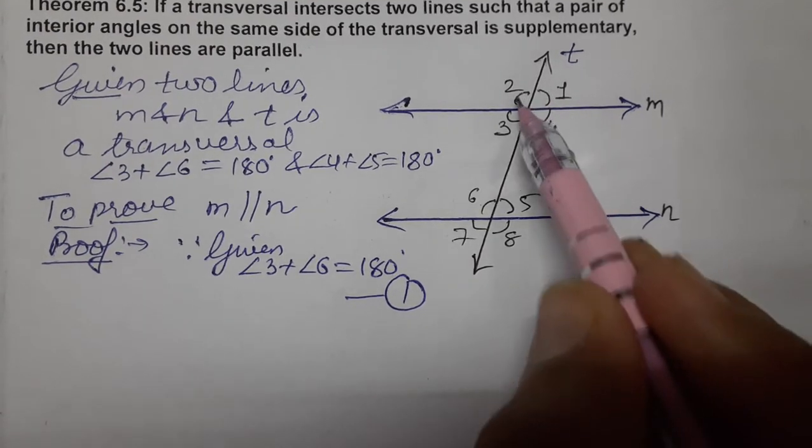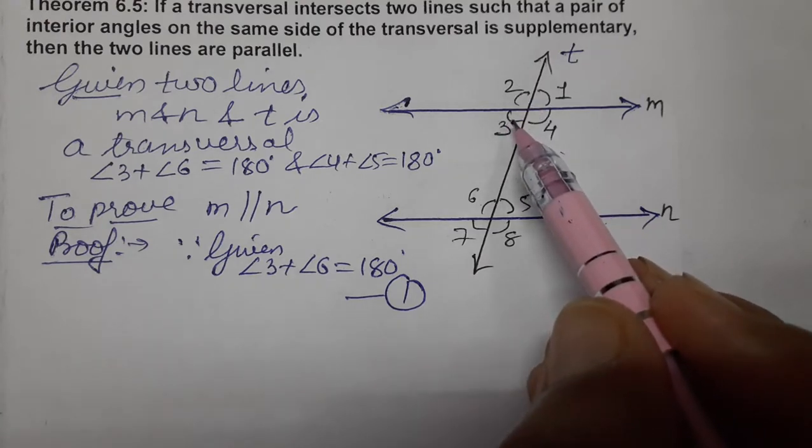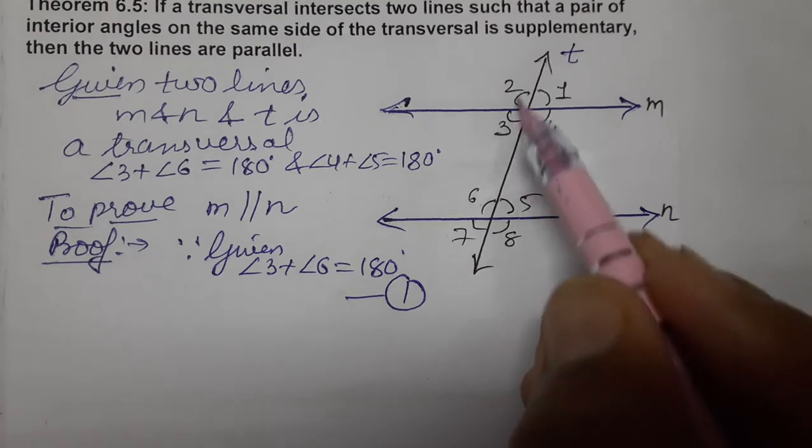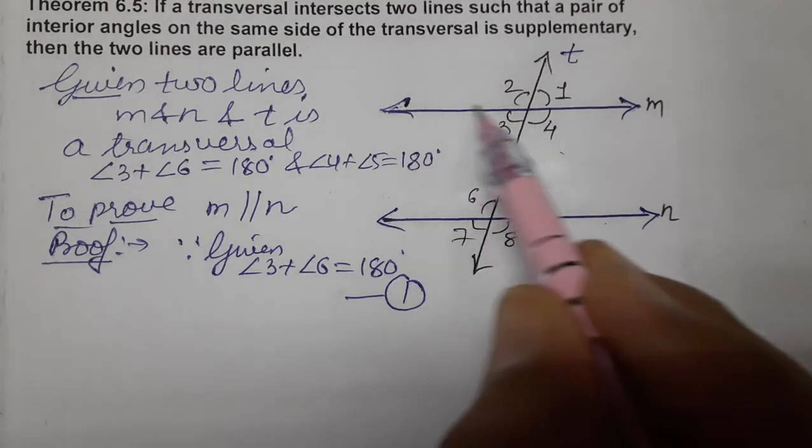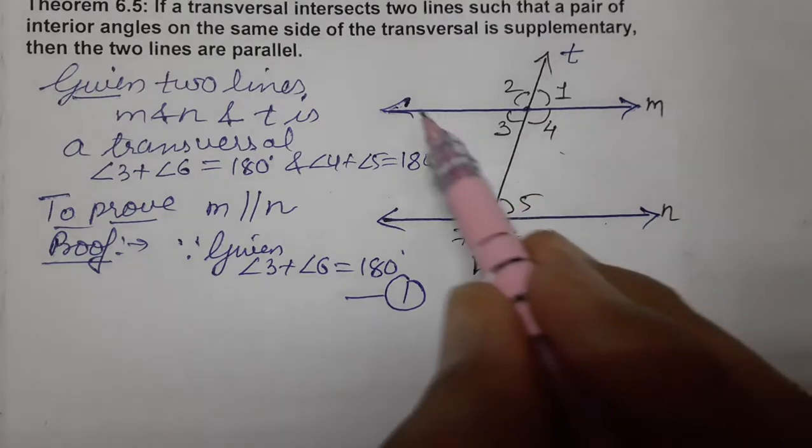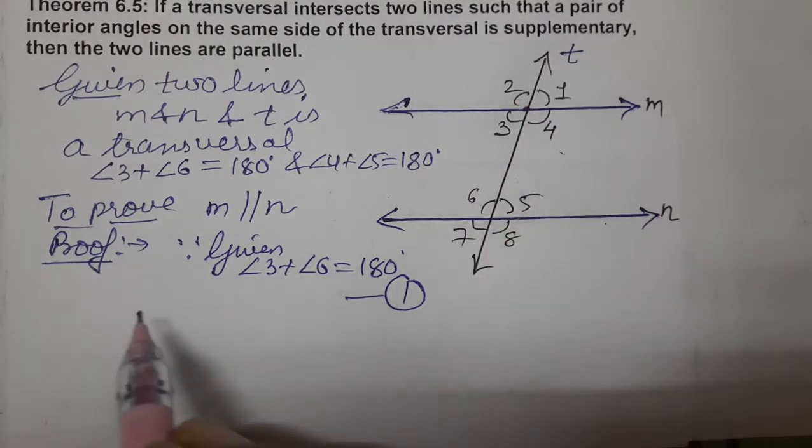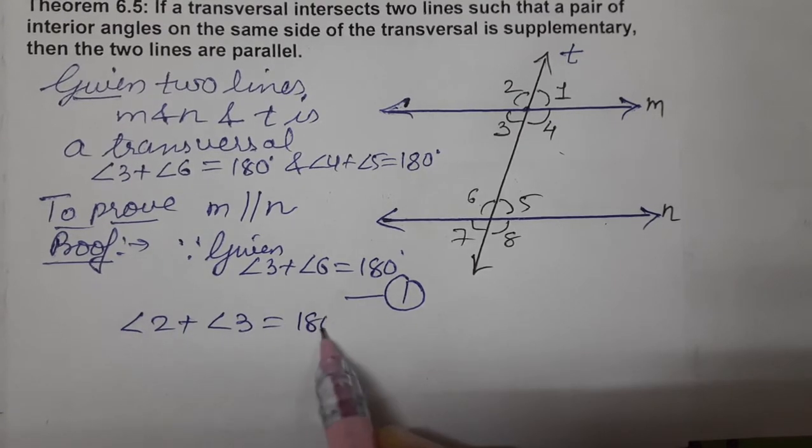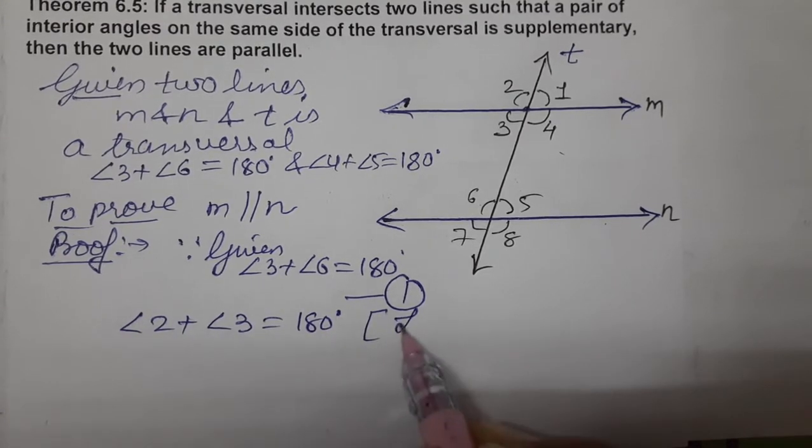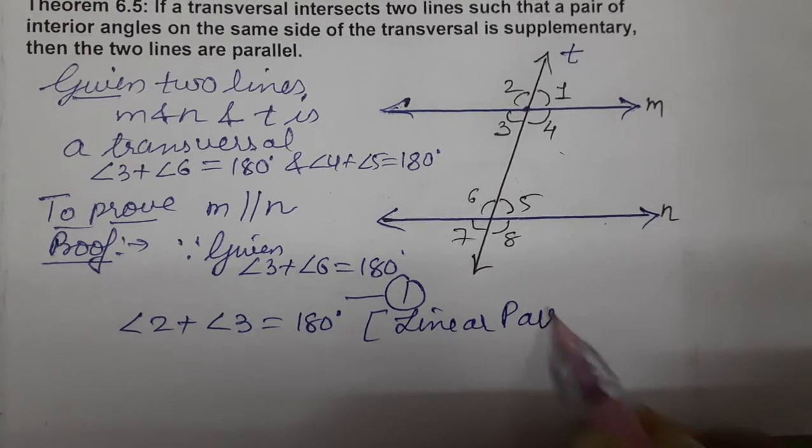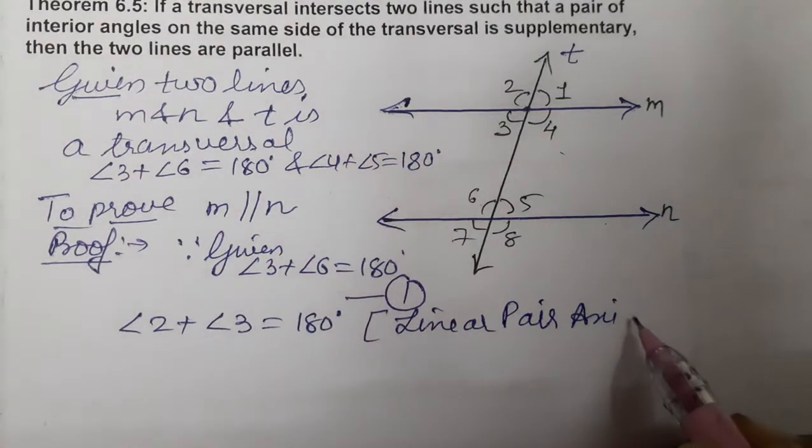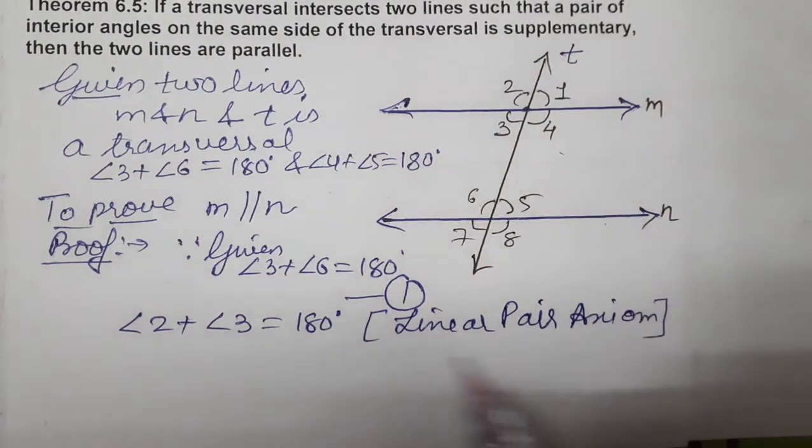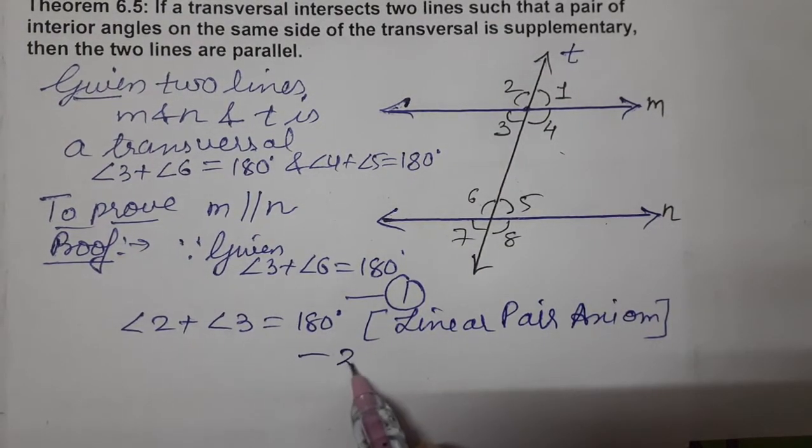Now, angle 2 plus angle 3 equals 180 degrees. Why? Because of the linear pair axiom. Angle 2 plus angle 3 also equals 180 degrees by linear pair axiom. So you must know all axioms. So this is equation number two.